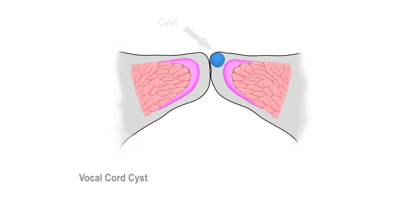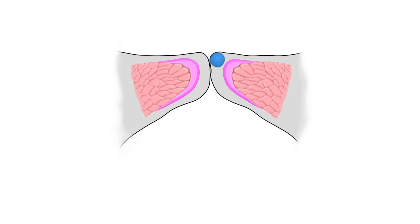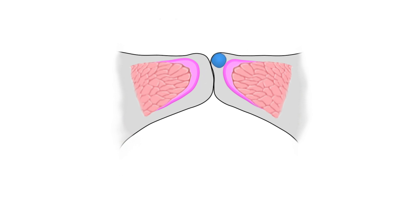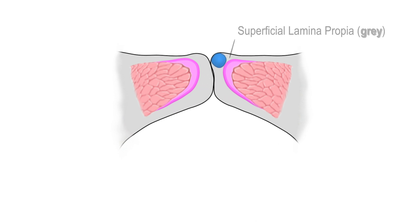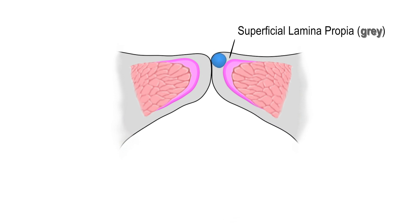A vocal cord cyst can similarly affect the voice, but instead of thickening of the mucosal lining as occurs with a nodule, it is an actual mass typically present within the superficial lamina propria layer.